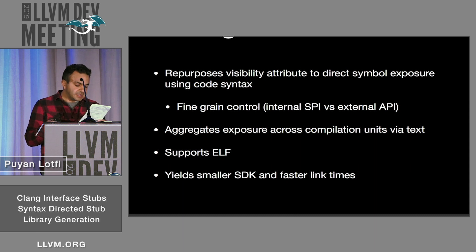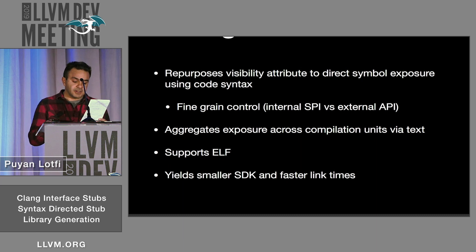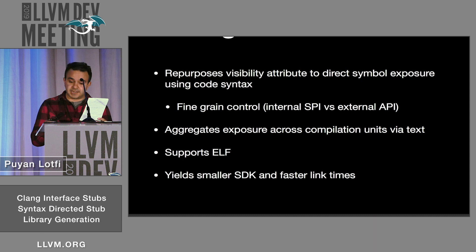This provides developers with fine-grained control over API exposure. It uses an intermediate text format to generate and merge symbols across compilation units. It brings these concepts to ELF without requiring changes to the linker, because the ELF specification only requires the ELF header and ELF linking only requires the ELF symbol table. This approach has benefits including smaller SDK distribution and enhanced linker performance, since the linker will be reading in a smaller .so file when linking against the stub library.